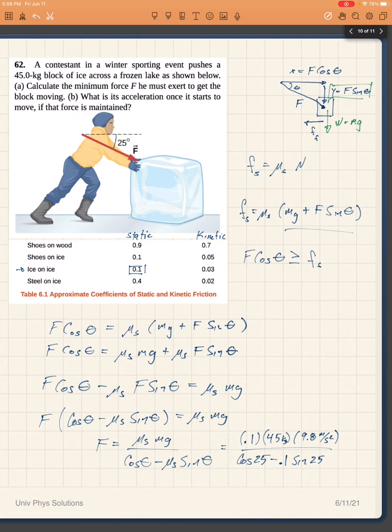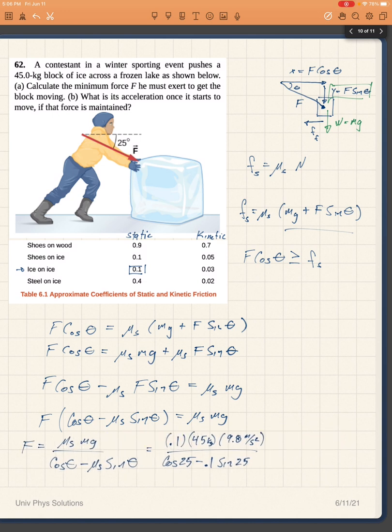As usual I will need to make a little bit more room. So the top would be 0.1 times 45 times 9.8, that gives me 44.1.